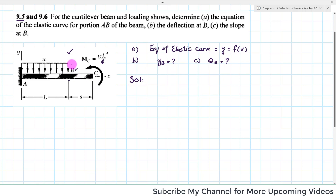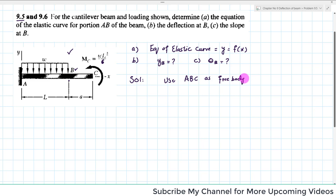You can see the loading shown on the cantilever beam. There is a fixed support at point A. First of all we will find the reaction forces at point A. We will use beam A-B-C as the free body diagram. We will draw the free body diagram of the cantilever beam in order to find the unknown reactions.